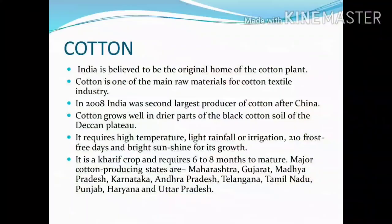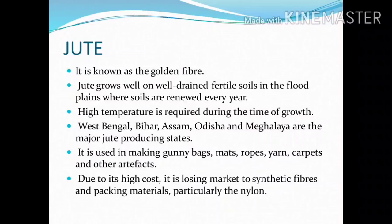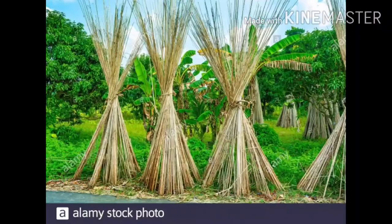Jute: It is known as the golden fiber. Jute grows well on well-drained fertile soils in the floodplains where soils are renewed every year. High temperature is required during the time of growth. West Bengal, Bihar, Assam, Odisha, and Meghalaya are the major jute-producing states. It is used in making gunny bags, mats, ropes, yarn, and carpets. Due to the high cost, it is losing market to synthetic fibers and packaging materials, particularly nylon.